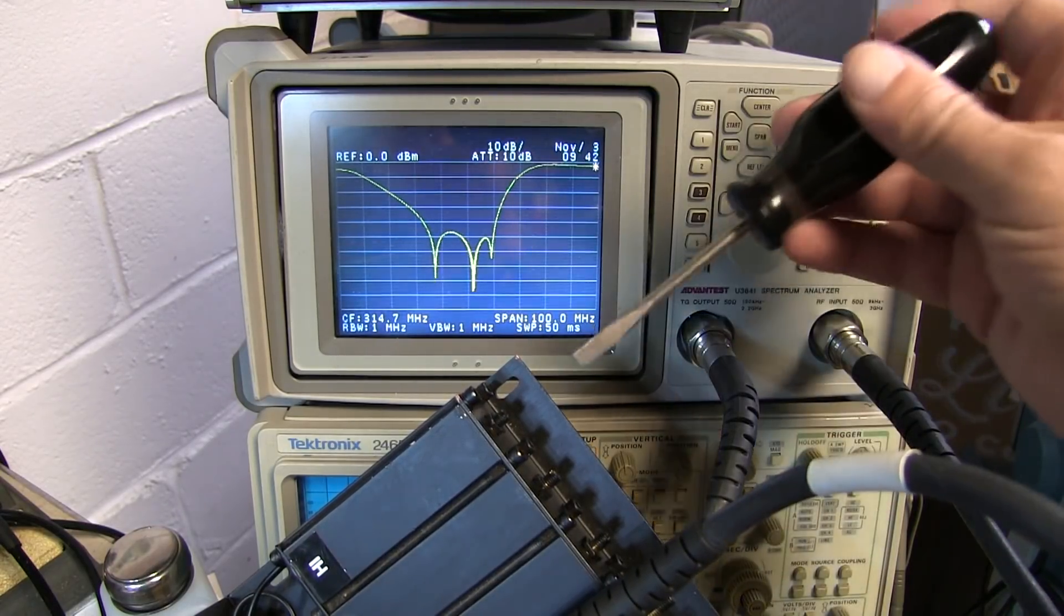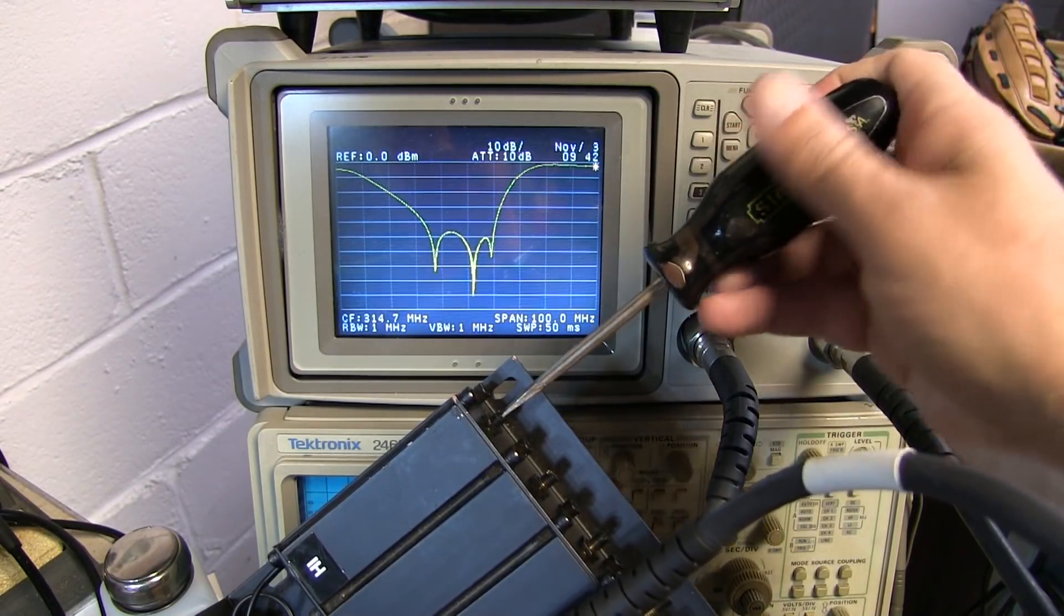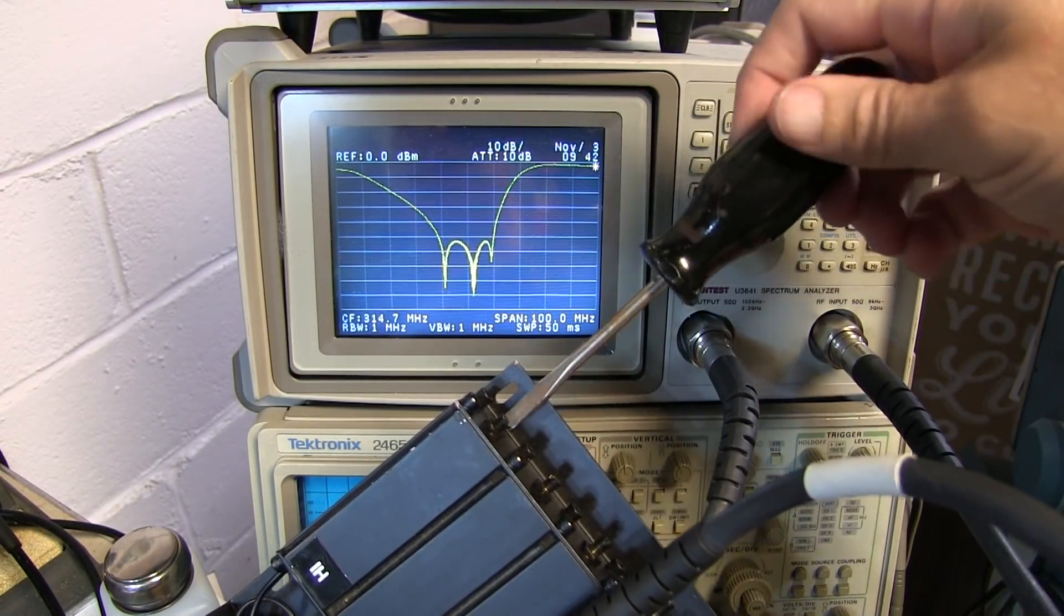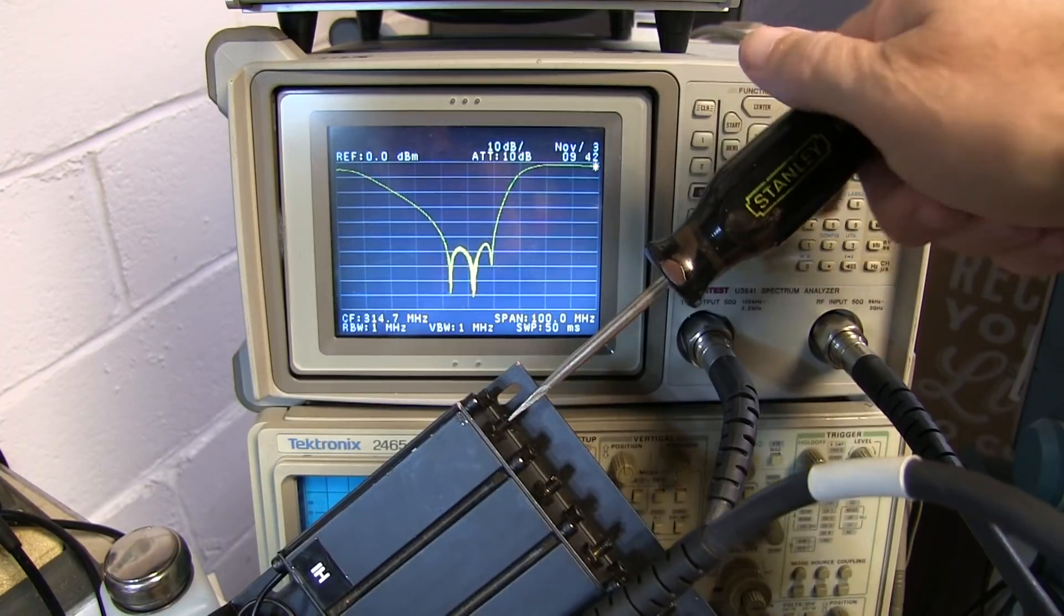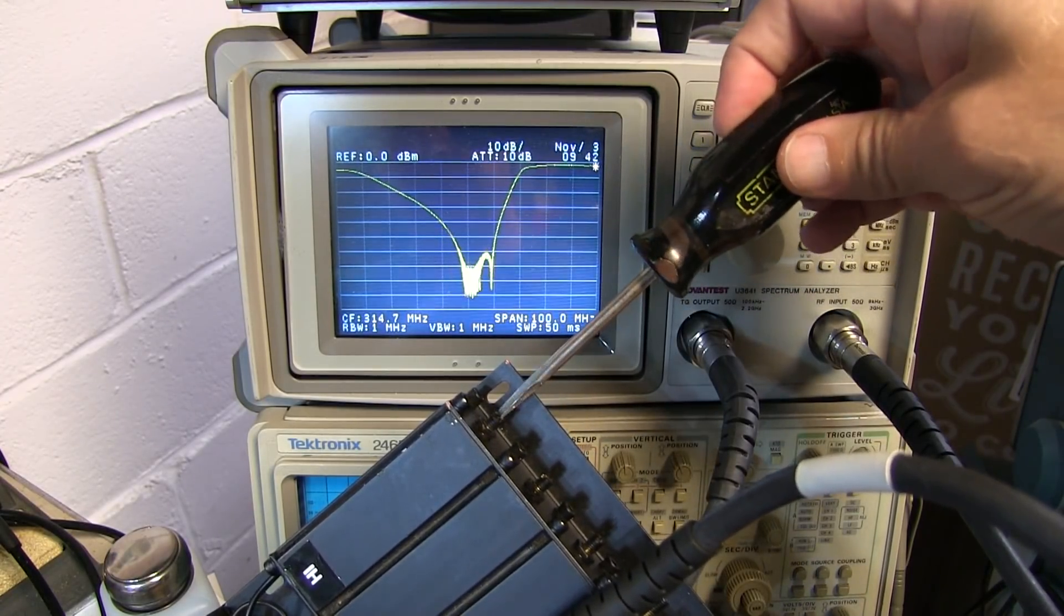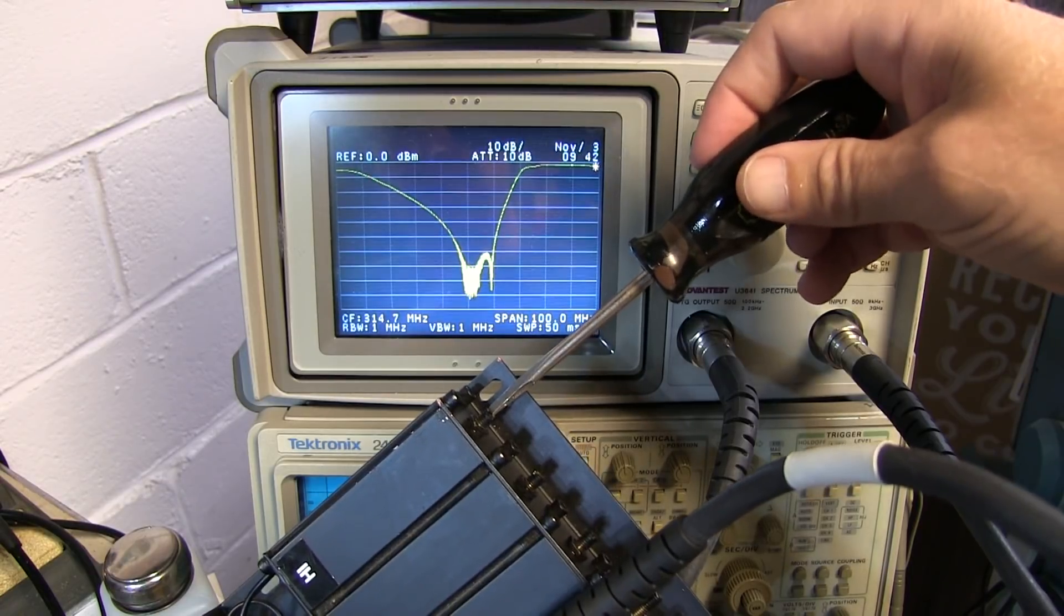It doesn't really matter where you start generally. So we'll just start on the end here, and I'll start adjusting this one. We can see that the notch that's all the way over on the right is moving over. Let's move that over until it lines up right about in the middle, and we're probably right about there.